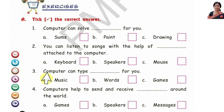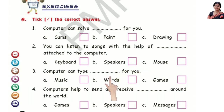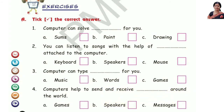Number 3: Computer can type dash for you. Option B — Words. Number 4: Computers help to send and receive dash around the world. Option C — Messages.